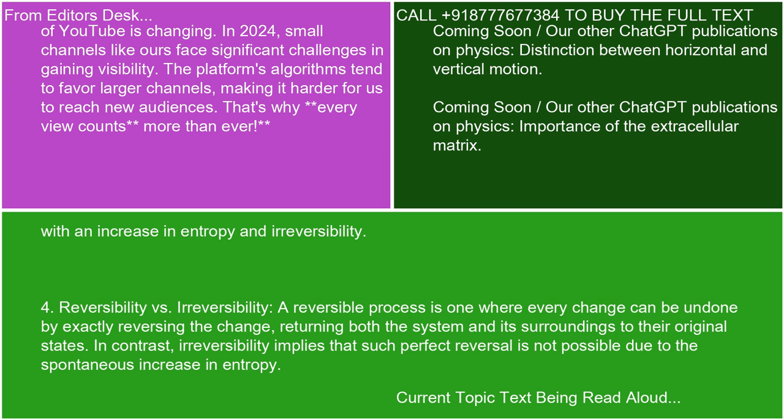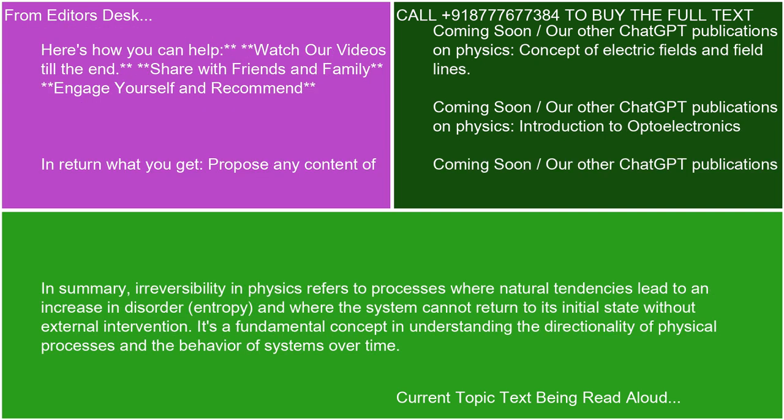4. Reversibility vs. irreversibility. A reversible process is one where every change can be undone by exactly reversing the change, returning both the system and its surroundings to their original states. In contrast, irreversibility implies that such perfect reversal is not possible due to the spontaneous increase in entropy. In summary, irreversibility in physics refers to processes where natural tendencies lead to an increase in disorder, entropy, and where the system cannot return to its initial state without external intervention. It's a fundamental concept in understanding the directionality of physical processes and the behavior of systems over time.